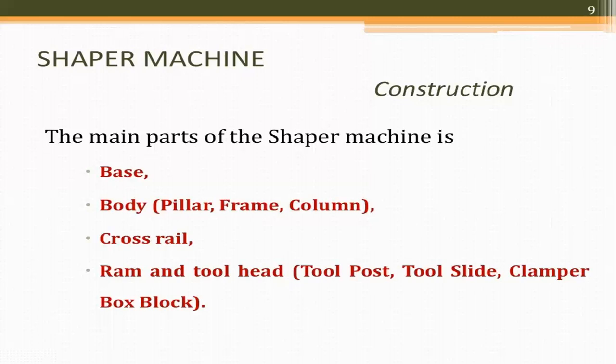The cross rail is mounted on the front of the body and can be moved up and down. The vertical movement of the cross rail allows jobs of different heights to be accommodated below the tool. A saddle slides along the cross rail and carries the work table. The RAM is driven back and forth by a slotted link mechanism; this back-and-forth movement is called the stroke and can be adjusted according to the length of the workpiece.